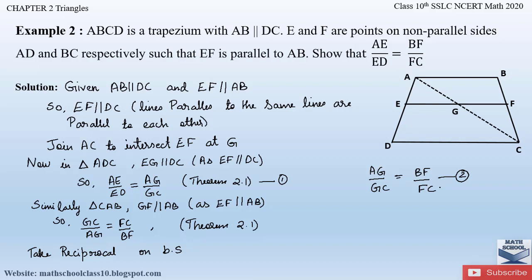For example, if 2 by 3 equals 2 by 3, taking the reciprocal gives 3 by 2 equals 3 by 2. The equal sign is still justified even when you take the reciprocal of any equation.